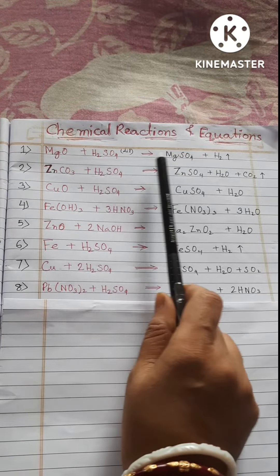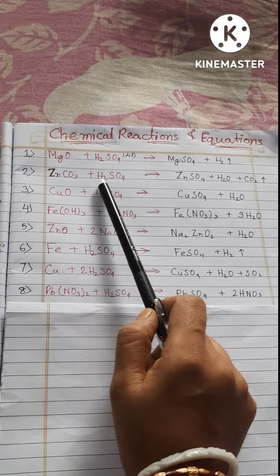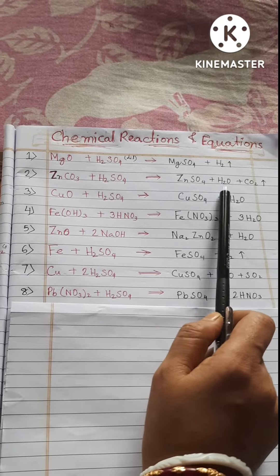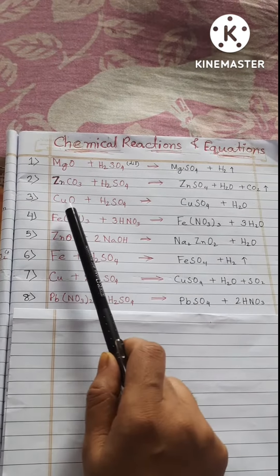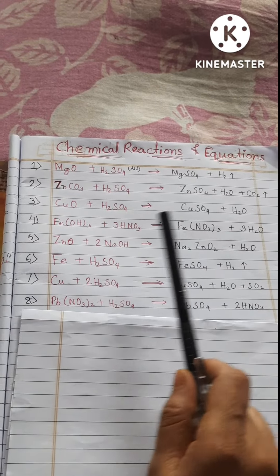MgO plus H2SO4 equals MgSO4 plus H2. ZnCO3 plus H2SO4 equals ZnSO4 plus H2O plus CO2. CuO plus H2SO4 equals CuSO4 plus H2O.